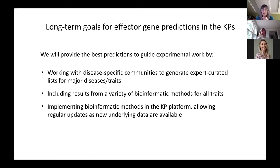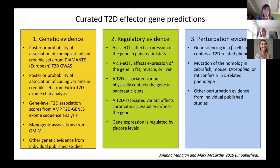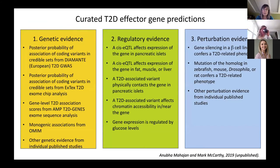Right now, we have two of these methods in the portal and I want to show them to you briefly, and then I'd like to get your feedback about how you would like to see these predictions. First, we have an expert curated list that we're calling Curated T2D Effector Gene Predictions. This is from Anubha Mahajan and Mark McCarthy. This has actually been in the portal for a little over a year now, but we have a new interface for seeing it in the CMDKP.